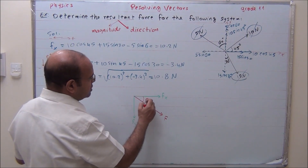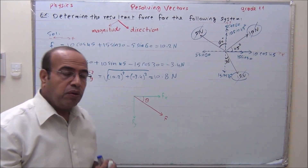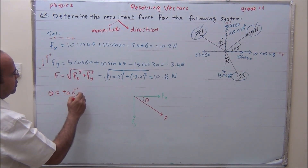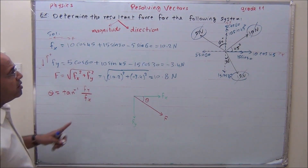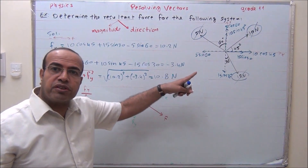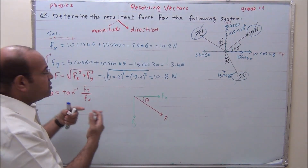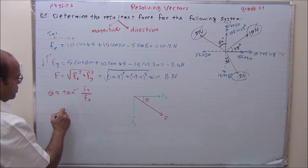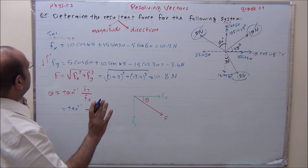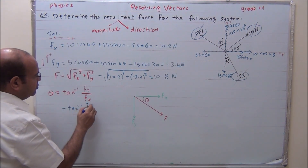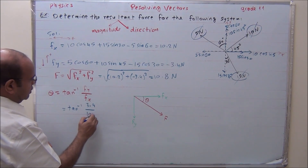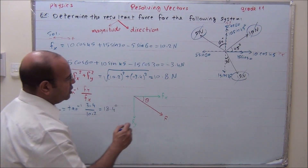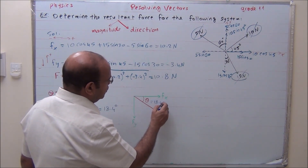The angle between the resultant force and the x-axis is theta. We can find theta using: theta equals arctan of Fy over Fx. The negative sign gives us the direction, so we just find the value of theta. It is arctan of 3.4 over 10.2. The angle is 18.4 degrees.